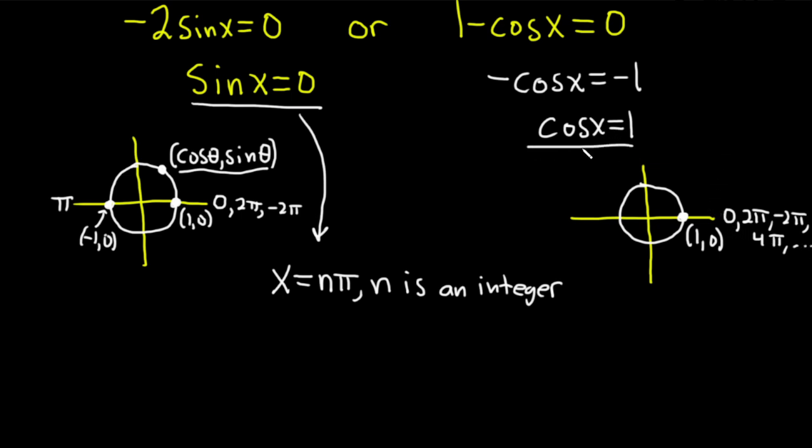So this equation is going to give us the answers x equals 2 n pi, where n is an integer. The first equation told us that x is equal to n pi. The second equation told us that x is equal to 2 n pi. So when you combine these together, you can just use x equals n pi. Because n could be an even number and that takes care of everything.